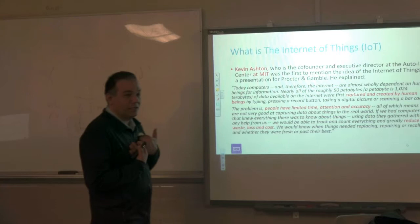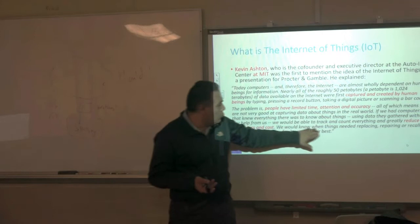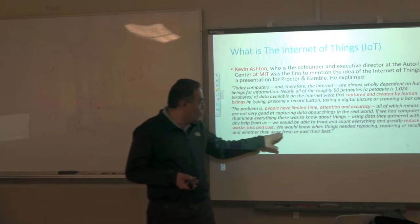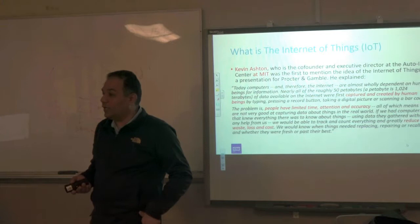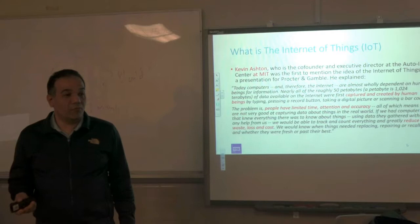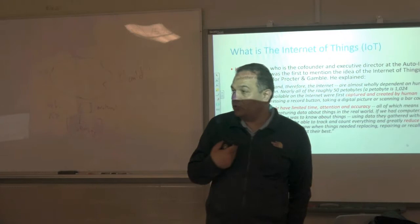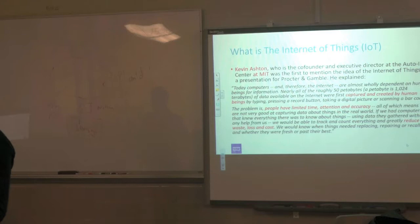If we had computers that knew everything about things using data gathered without human help, we could track and count everything and greatly reduce waste, loss, and cost. We would know when things needed replacing, repairing, or recalling. Think about a fleet of cars — when there's a problem, when you need gas or oil replacement, an operator needs to know. If the whole fleet is connected to a central cloud that collects data and gives instructions, that changes everything.